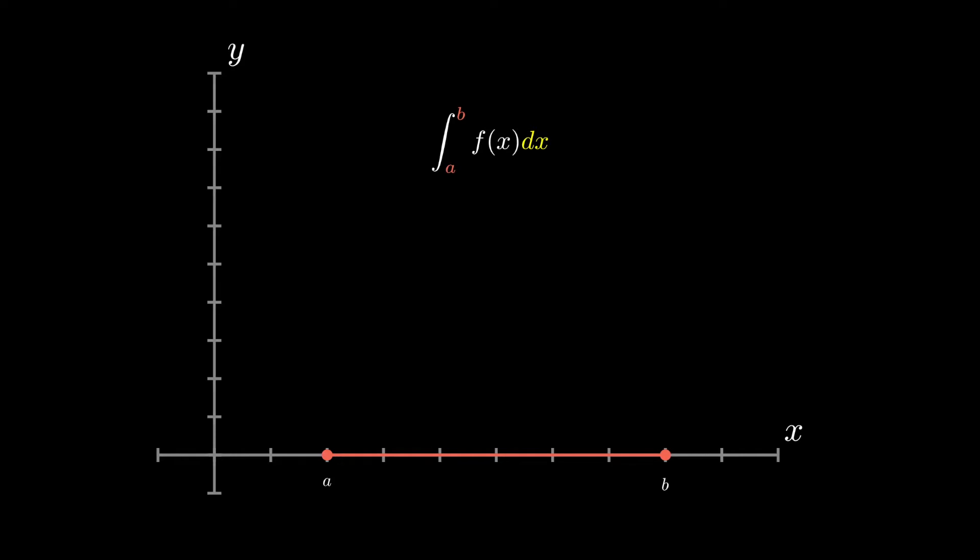What we have here is an integral we've probably all seen before in some introductory calculus course. If we think about the dx as the tangent vector moving along the path which is the line from a to b, then f dx is actually a one form. We can think about this as assigning a value to each tangent vector along the path.